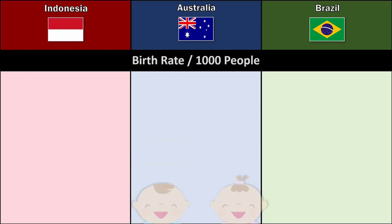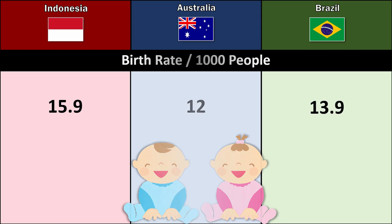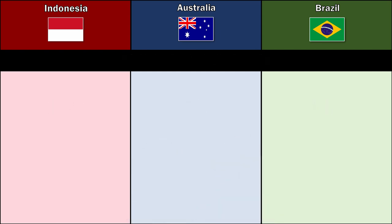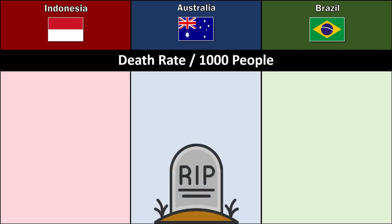Birth rate per 1,000 people: Indonesia 15.9, Australia 12, Brazil 13.9. Death rate per 1,000 people: Indonesia 6.77, Australia 6.76, Brazil 6.90.